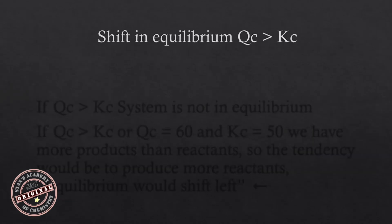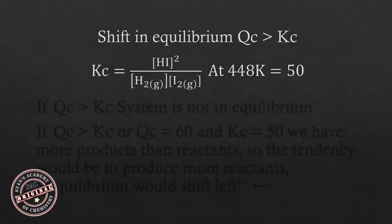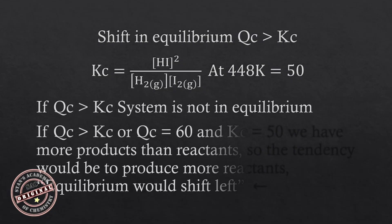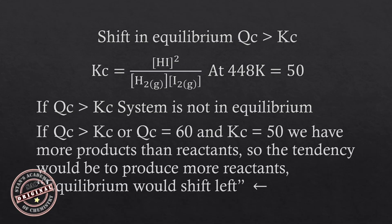Now let's look at the second scenario — a shift in equilibrium caused by a larger value of Qc, where Qc is greater than Kc. For this reaction at 448 Kelvin, if Qc is given as 60, which is greater than Kc of 50, we have more products than reactants. The tendency would be for the products to change back into reactants; we say the equilibrium shifts left, and the rate of the backward reaction increases.